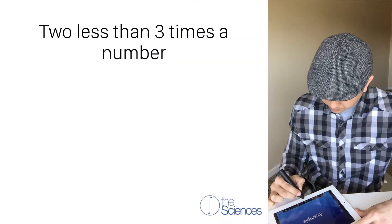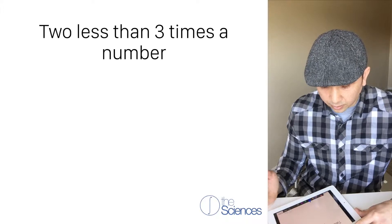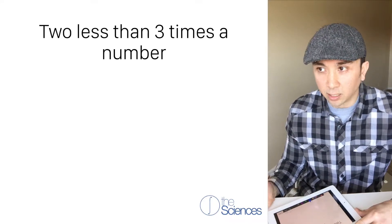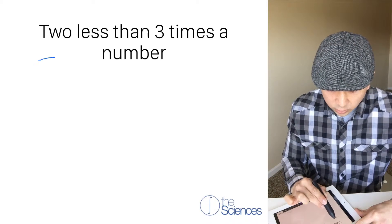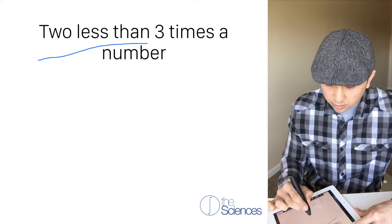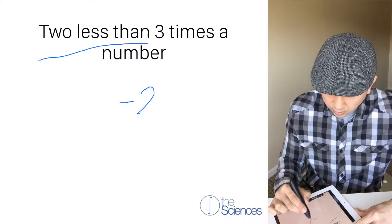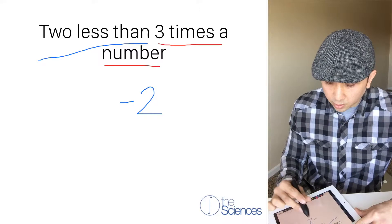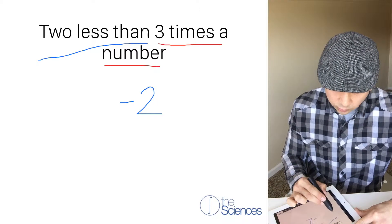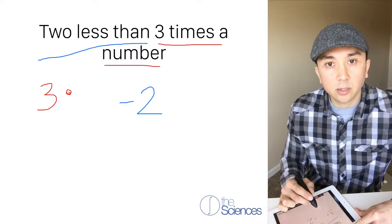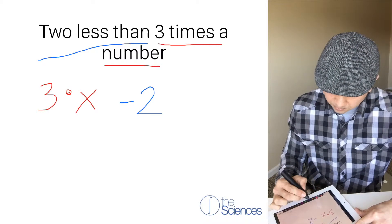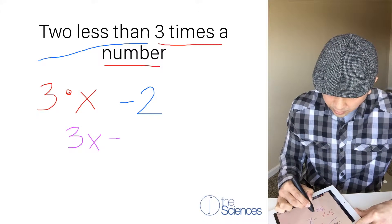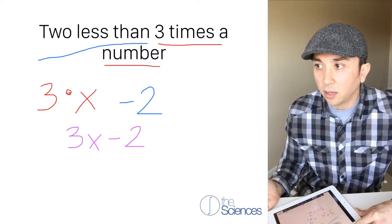Let's do an example. We have '2 less than 3 times a number.' How do we translate this into an algebraic expression? We know that 'less than' means we're going to subtract, so we subtract 2. And '3 times a number' — times means multiply — so we write 3 times a number, and that number can be a variable, so x. Therefore, 3x minus 2 is the same as saying '2 less than 3 times a number.'